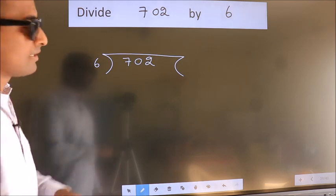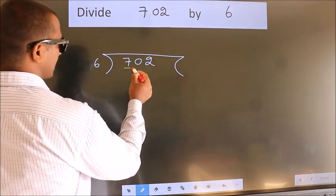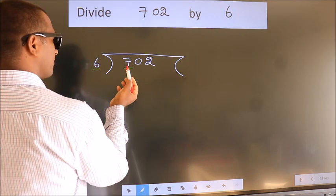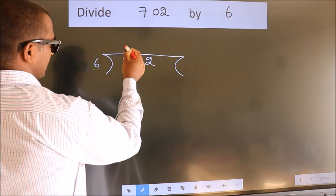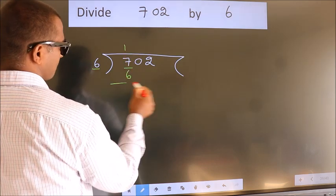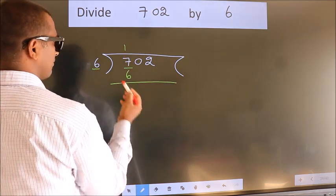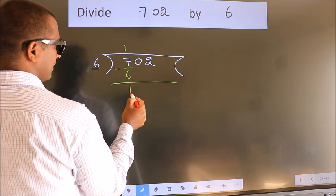Next, here we have 7, here 6. A number close to 7 in 6 table is 6 times 1 is 6. Now we should subtract. We get 1.